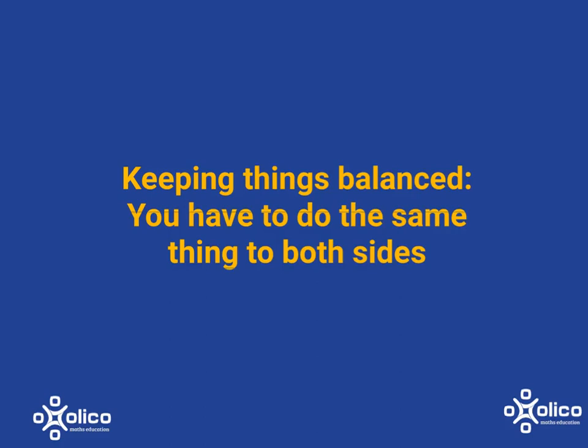When you start with an equation, you've got two sides equal to each other. As you work with the equation, you want to make sure that you keep those two sides equal. So the golden rule of equations is that what you do to one side of the equation, you have to do to the other side so that you keep it balanced. Let's have a look at this.